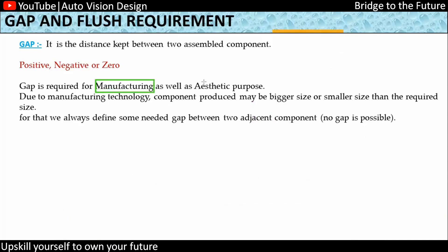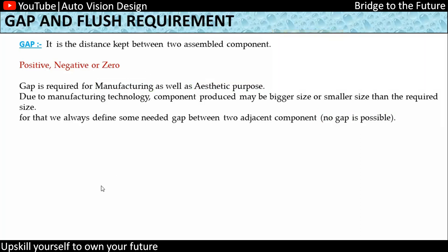We require the gap for two main purposes: first, because accurate manufacturing repeatability is not possible; second, for aesthetic purposes — the separation between two parts allows for theme color coding or other visual treatments. Regarding tolerances, we get the gap and flush values from the OEM in a gap and flush sheet. That sheet provides the values after tolerance stack-up has been completed.